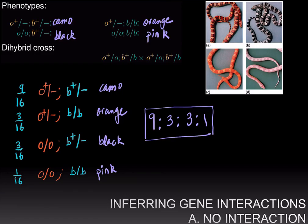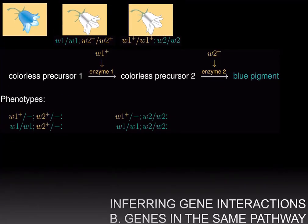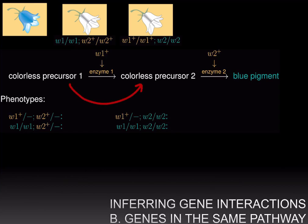In the corn snake example, the two genes were in different pathways and therefore had no interactions. What happens when the two genes are in the same pathway? We've already seen an example of this with the harebell plant, which makes blue wild type flowers, and through complementation analysis we know this phenotype is controlled by two genes. The W1+ wild type allele makes enzyme 1, which converts colorless precursor 1 into colorless precursor 2, and the W2+ wild type allele makes enzyme 2, which converts colorless precursor 2 into blue pigment.